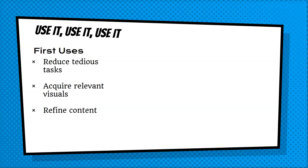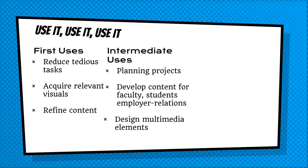This might include having generative AI produce date listings or initial communications you plan to send out. It can also mean getting quick visuals without ceaselessly searching, as well as refining content you're working with. As you get settled into using it, there are more interesting things you can do. You can start to plan and scope out projects, build out content for students, faculty, and employer relations — things like how-to's, tip sheets, and guides for preparing for different parts of the job search.